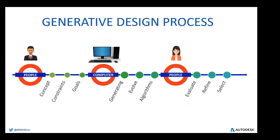With generative design, we work in a more streamlined process. Humans define the concept, the constraints, and the goals. We use a computer to generate multiple solutions, evolve them towards an optimal solution, and use algorithms to find that optimal solution. Then it is again humans who evaluate the results and refine design solutions to select the proper one for the purpose. Generative design is not really an automation tool that will take away our jobs — it will actually create more jobs because we need more people to understand how to build up the whole design technology around it.